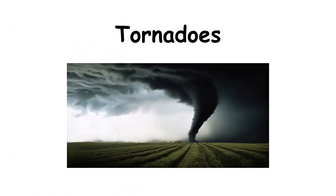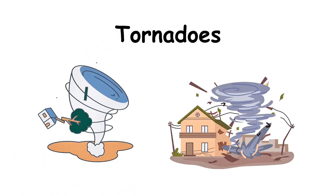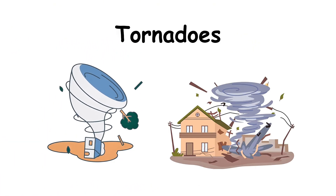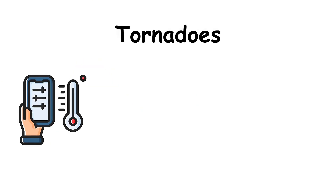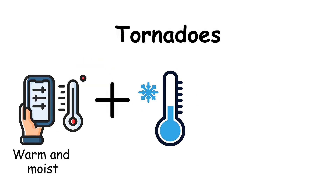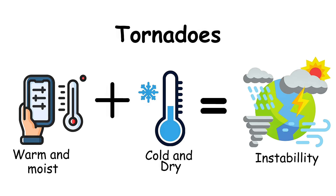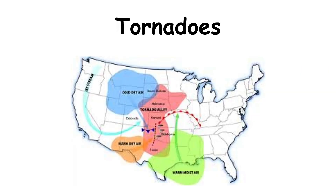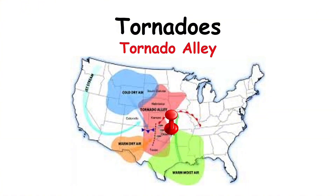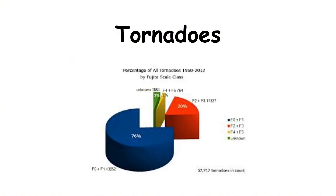Tornadoes. A tornado is a rapidly rotating column of air that extends from a thunderstorm to the ground. It forms when warm, moist air meets cold, dry air, creating powerful instability in the atmosphere. Tornadoes are most common in the United States, especially in an area known as Tornado Alley, but they can occur in many parts of the world.